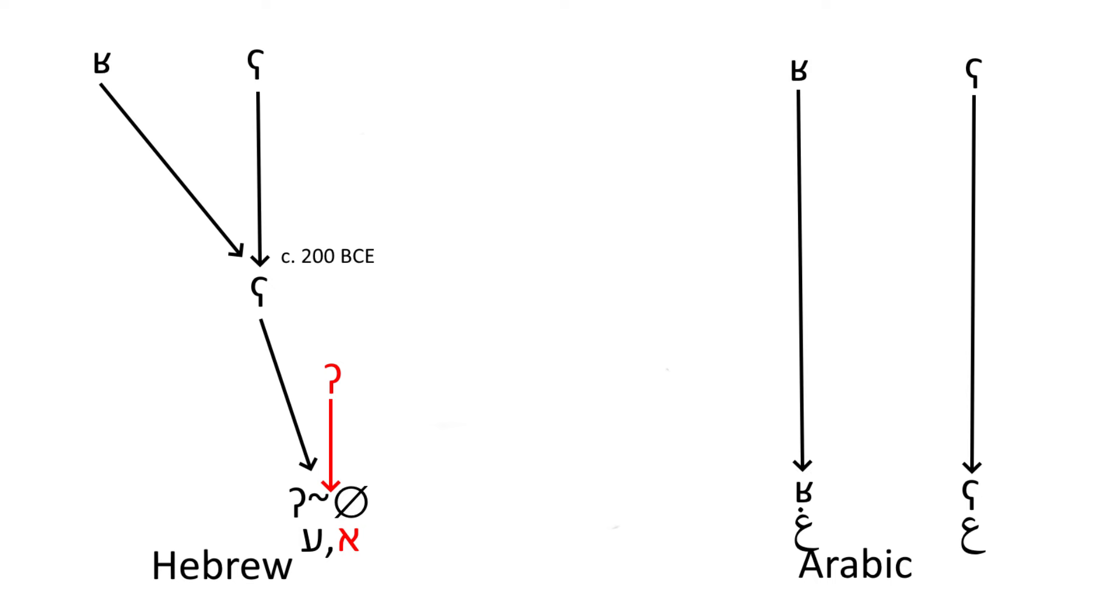The uvular ġ eventually merged with the pharyngeal ʕ, and recently modern Hebrew has made the pharyngeal ʕ merge with the glottal stop or become silent.